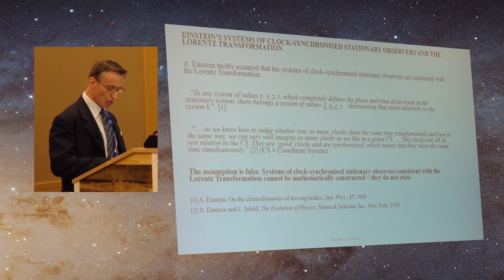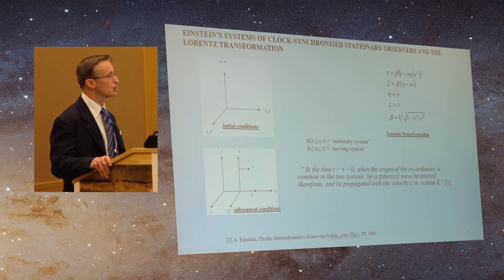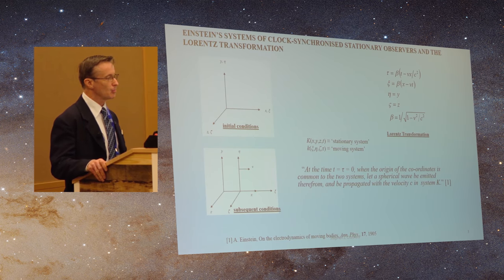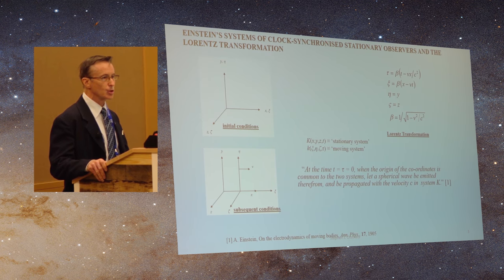What Einstein effectively did was take one observer, assume that it could speak for all observers, on the basis of his assumption that he could construct that system.